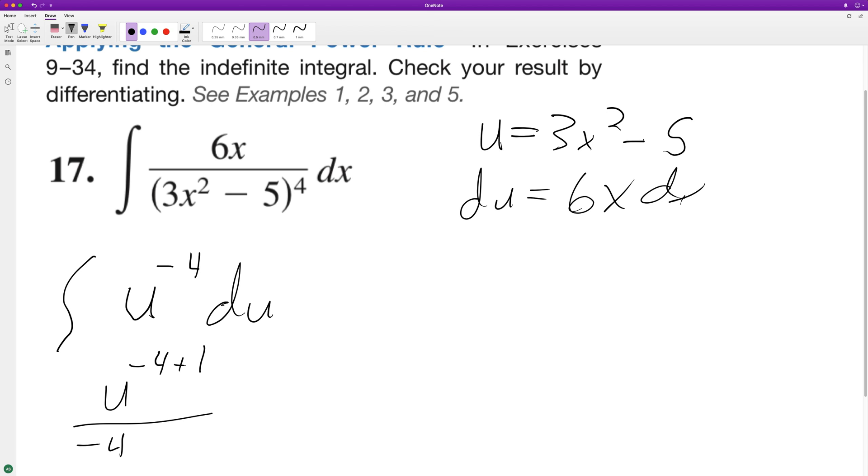And then that's the same thing as u raised to the negative 3. We can sub back in, so we have 3x squared minus 5 raised to the negative 3 over negative 3 plus C.